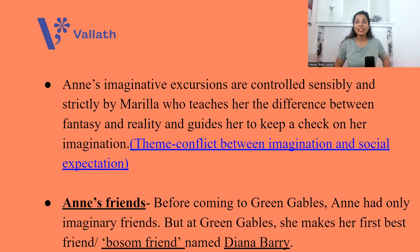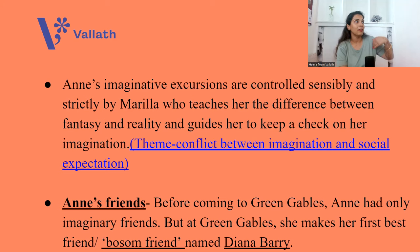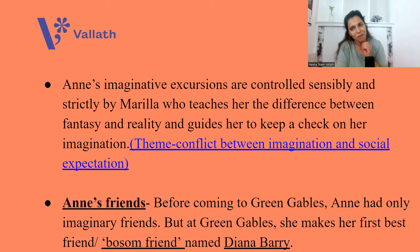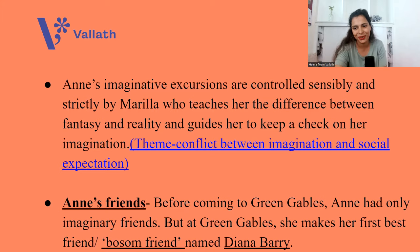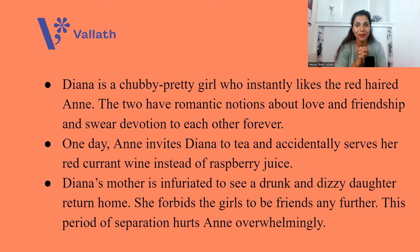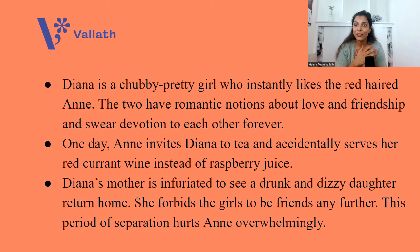Now about Anne's friends: before coming to Green Gables, Anne had only imaginary friends — she made playmates in nature and trees. But at Green Gables she made real friends. The most important friend is Diana Barry — her first best friend, whom Anne calls her 'Bosom Friend.' Diana is a chubby, pretty girl who instantly likes the red-haired Anne. The two have romantic notions about love and friendship and swear devotion to each other forever.